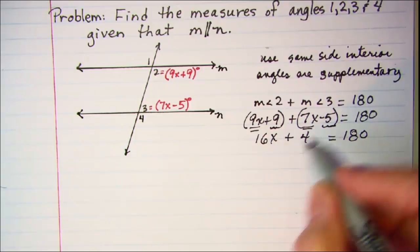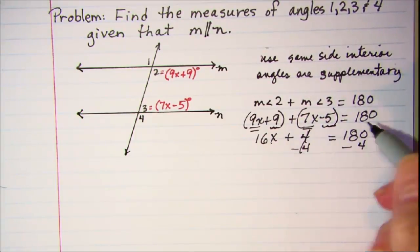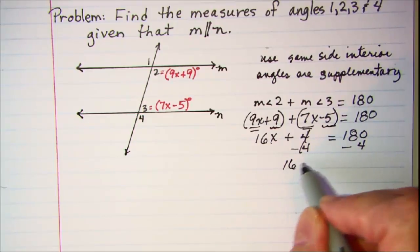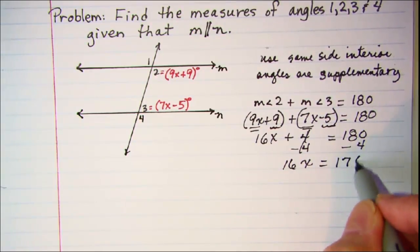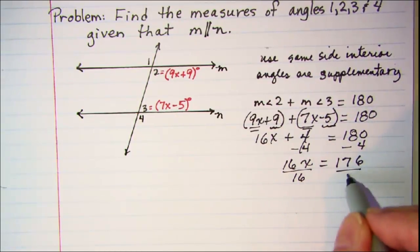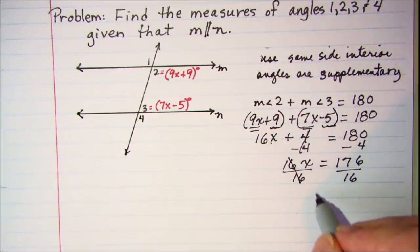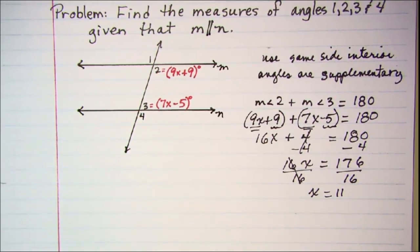To solve for x, let's subtract 4 from both sides. These will cancel and we have 16x is equal to 176, and then divide by 16 on both sides. These will cancel and x is equal to 11.